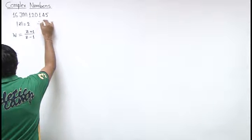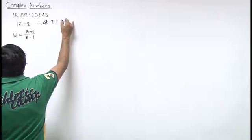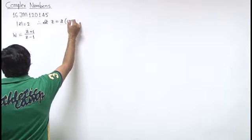So, mod of z equals 2. Assume z equals 2 times cos theta plus iota sin theta.